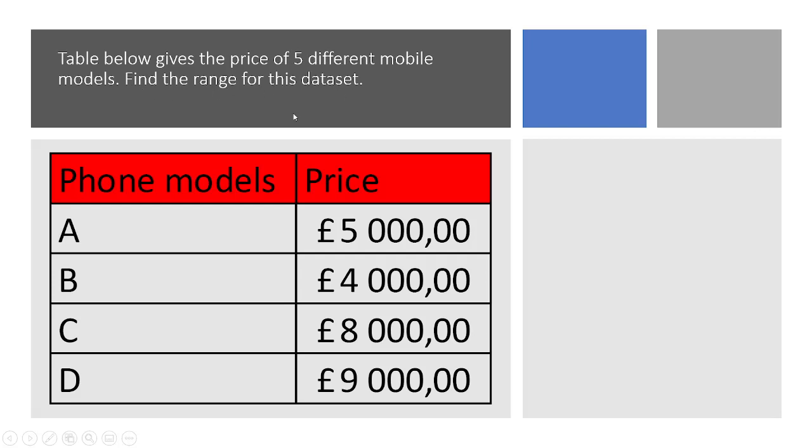it gives the price of 5 different models. Find the range of the data set. So model A costs £5,000, model B £4,000. It's a lot of money, but these are phone models that are made in diamonds or something. I don't know why I put so much money, but here we are. So what you need to do is just the difference. You take the largest amount minus the lowest amount,